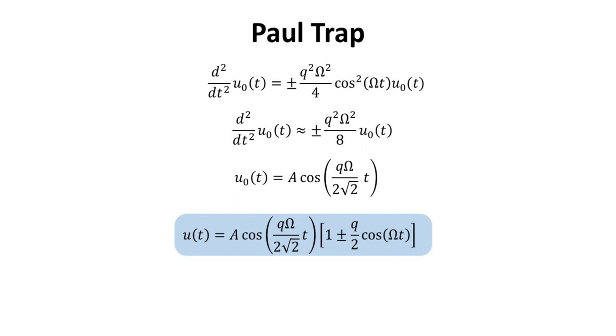We can go a step forward and substitute the expressions for U0 of t and delta U of t in the equation for the total motion, obtaining the following expression. We can see that total motion has two parts: the slow motion with frequency equal to q omega over 2 times square root of 2, and a fast micro-motion with frequency omega. Notice that the amplitudes of both parts are also different. While the slow motion has amplitude A, the micro-motion's amplitude is A times q over 2. As long as q is less than 1, our assumptions hold true.